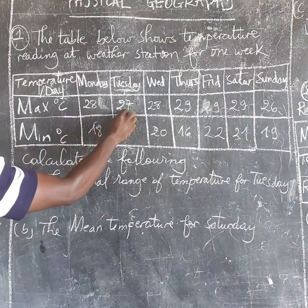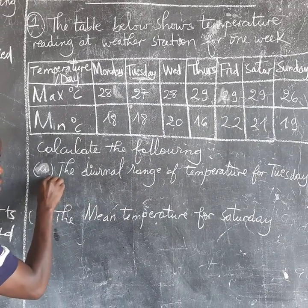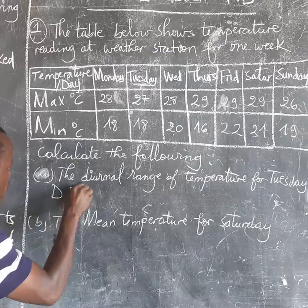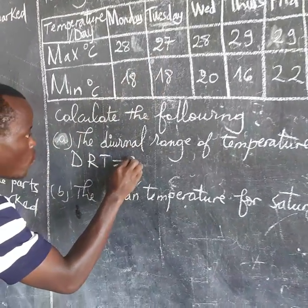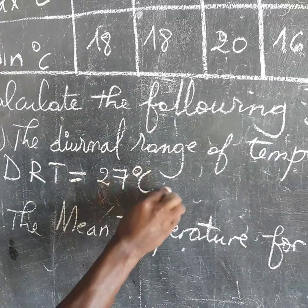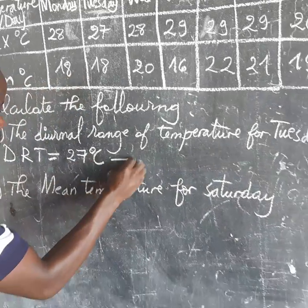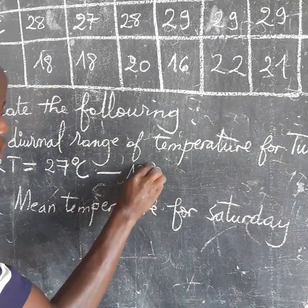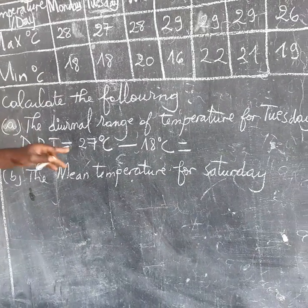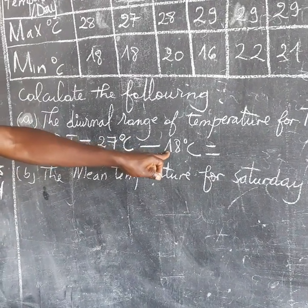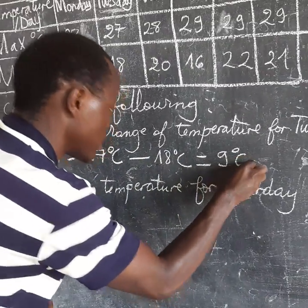On Tuesday, the maximum temperature was 27°C minus the minimum temperature of 18°C, and the answer is 9 degrees Celsius.